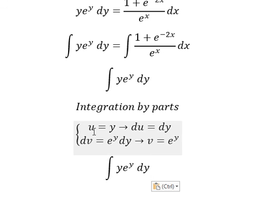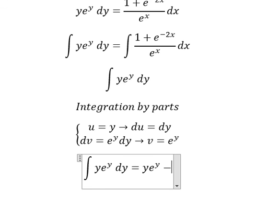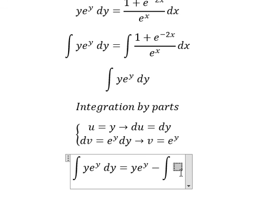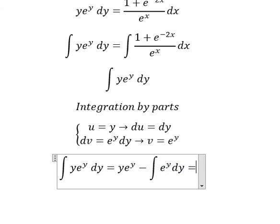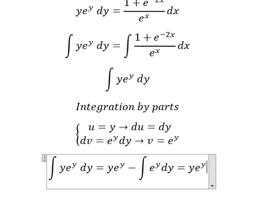After we do this integration, we have u multiplied by v, minus du multiplied by v. So we have the integration of e to the power of y, e to the power of y dy, and now we have the final answer for the left side.